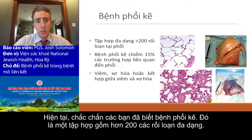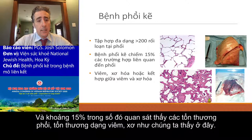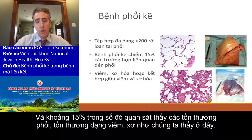You probably already know what interstitial lung disease is, but just to bring us all together, it's a diverse collection of disorders. There's over 200 of them, and it's about 15% of what we see in a pulmonary clinic, and there are inflammatory subtypes and fibrotic subtypes.